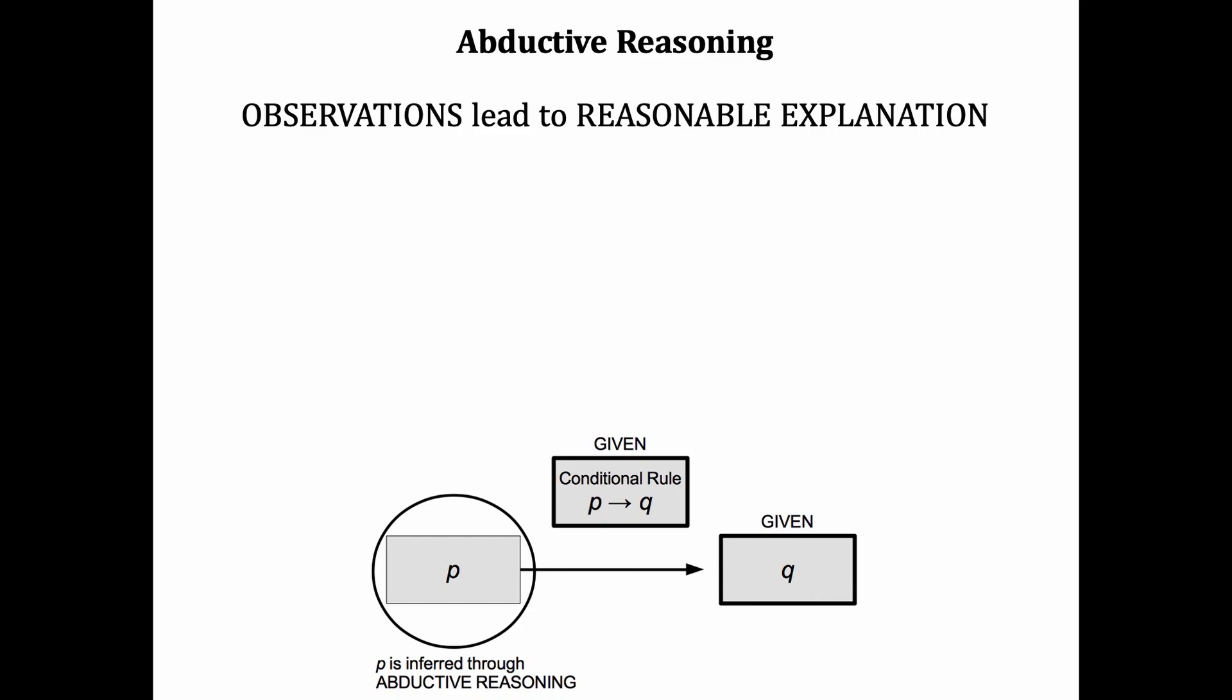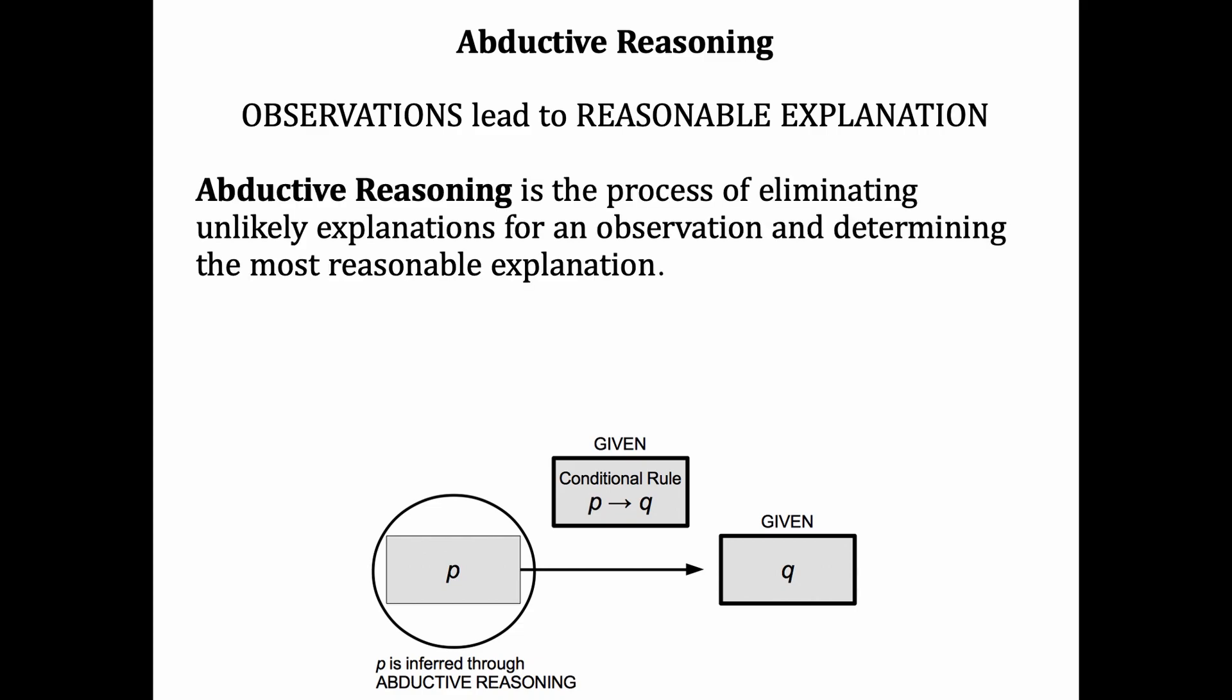The first type is abductive reasoning. This is the process of eliminating unlikely explanations for an observation and determining the most reasonable explanation.